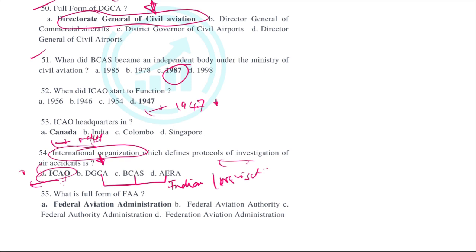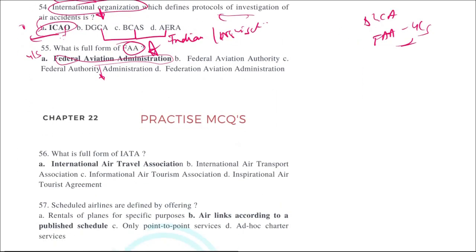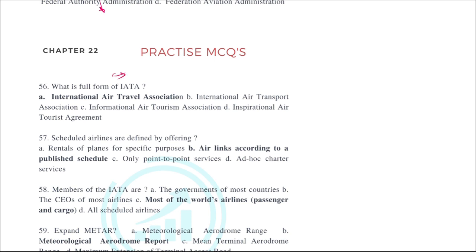The full form of FAA is Federal Aviation Administration, which is the regulatory body in the United States, similar to India's DGCA. The full form of IATA is International Air Transport Association. Note: there is a typing error in the book; the correct answer is International Air Transport Association, and this will be corrected in the next edition.